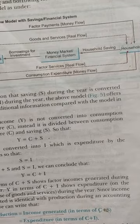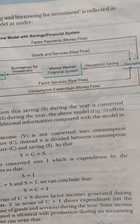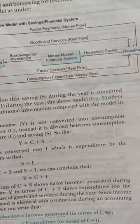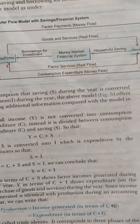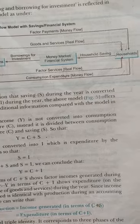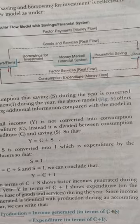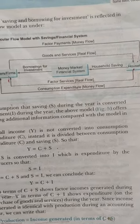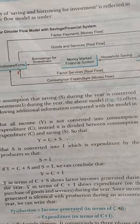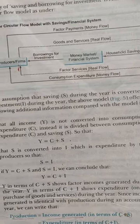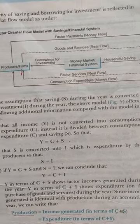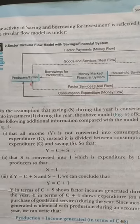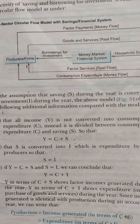Point three: all income is not converted into consumption expenditure. So income Y does not simply equal C. Instead, Y = C + S, where S is saving. The saving that households do not consume is channeled into investment. Therefore saving equals investment: S = I.